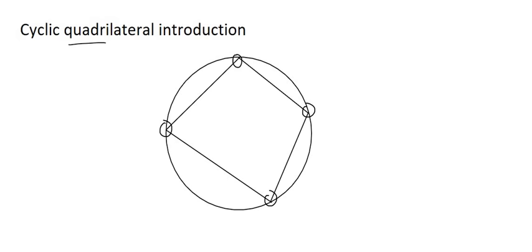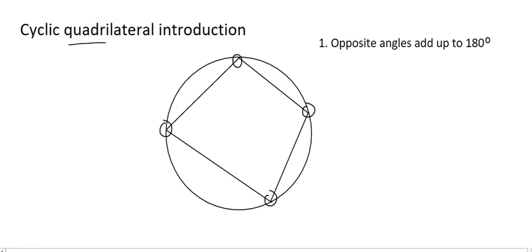Now let's look at some properties of cyclic quadrilaterals. The first property is that the opposite angles always add up to 180 degrees. So for example if this angle at A is 100 degrees then the opposite angle B would be 80 degrees. That is a property of a cyclic quadrilateral.